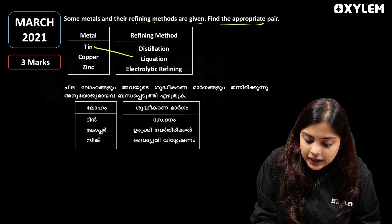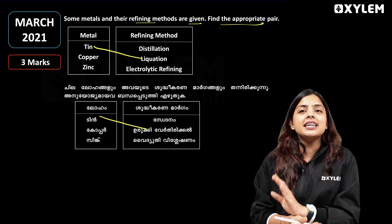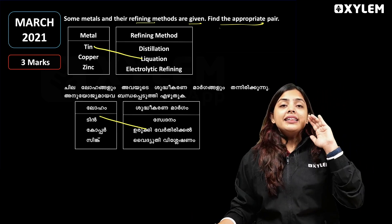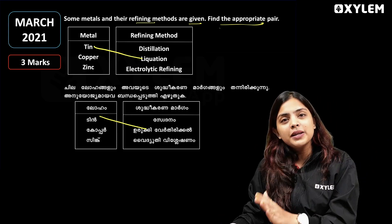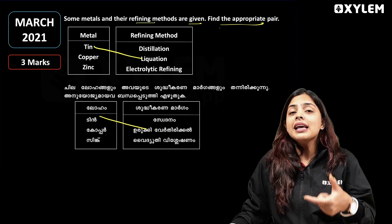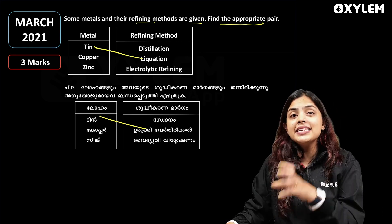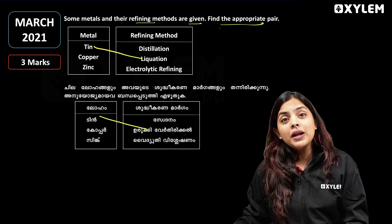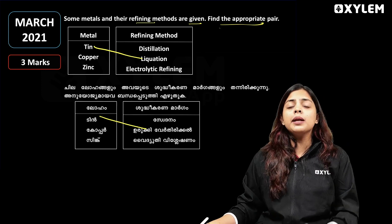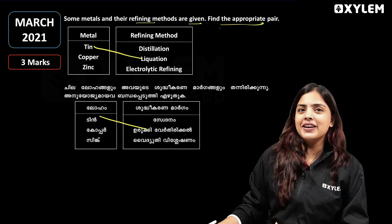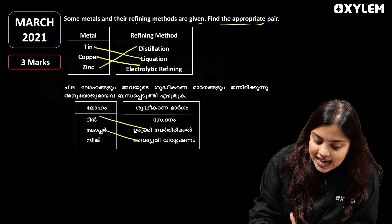The first refining method is liquation. The second is distillation, which uses the boiling point principle. Low boiling point metals — cadmium and mercury — are refined by distillation. This is not used for copper. The last method is electrolytic refining, used to refine copper.